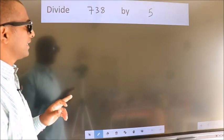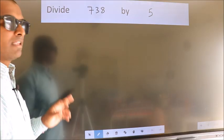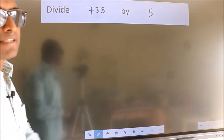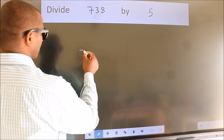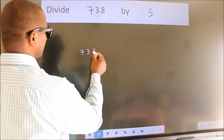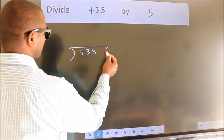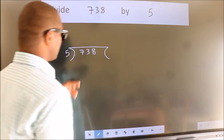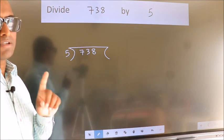Divide 738 by 5. To do this division, we should frame it in this way. 738 here, 5 here. This is your step 1.